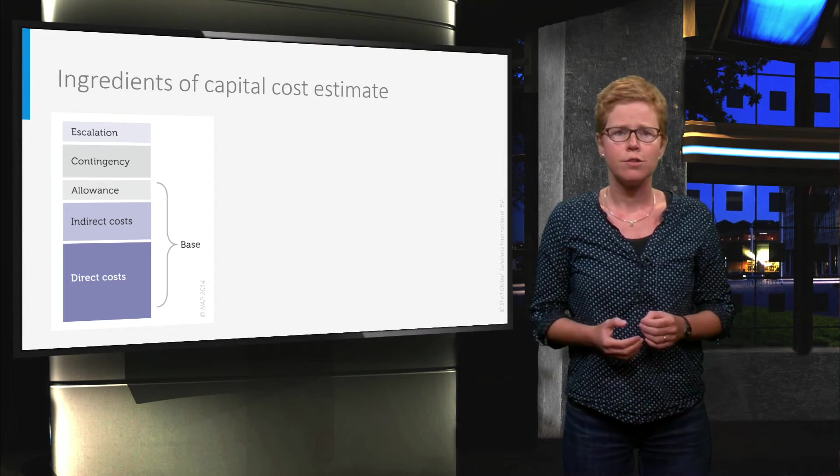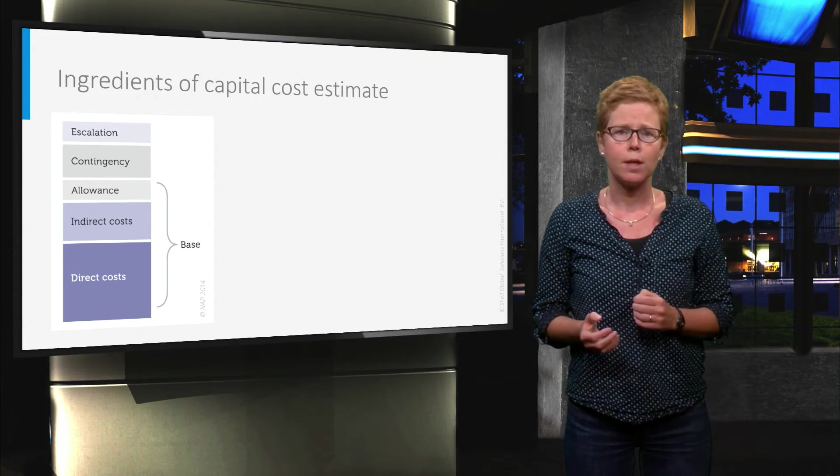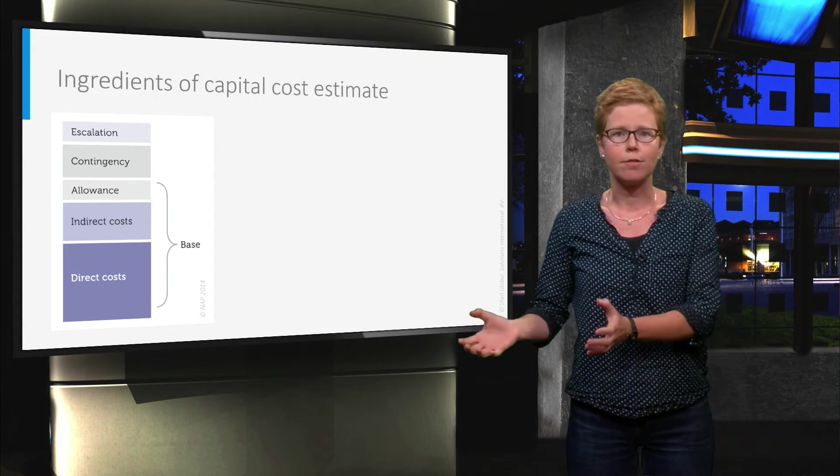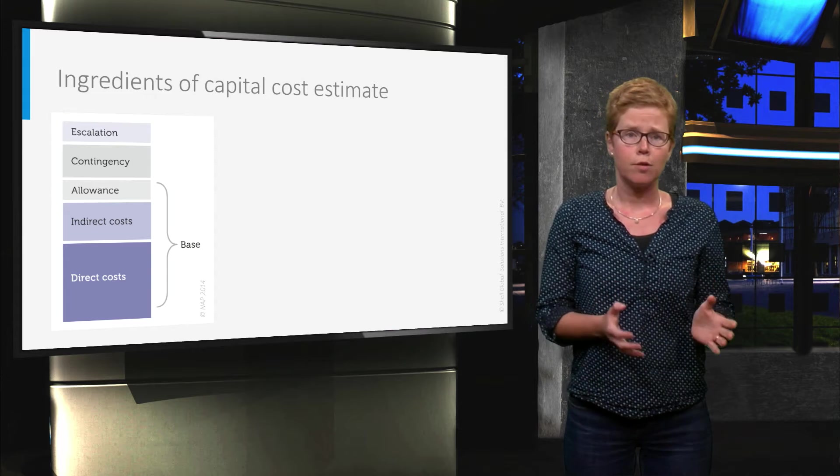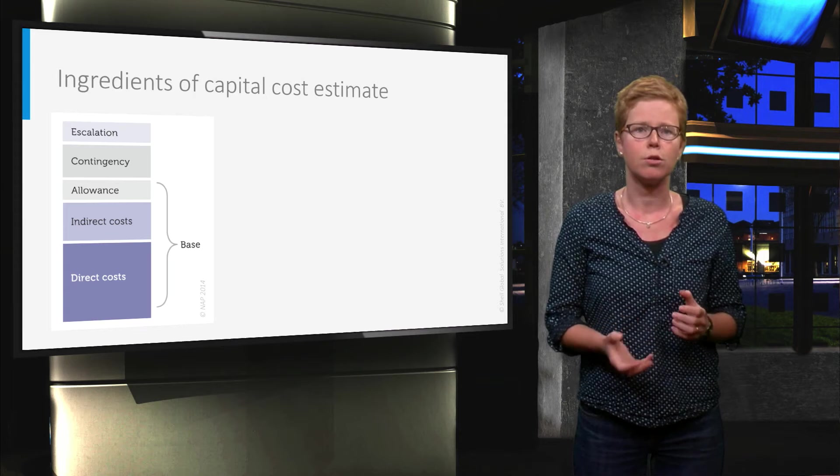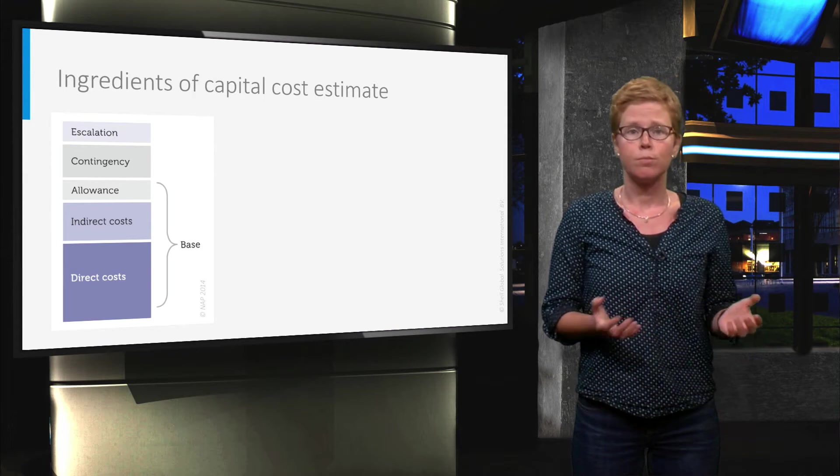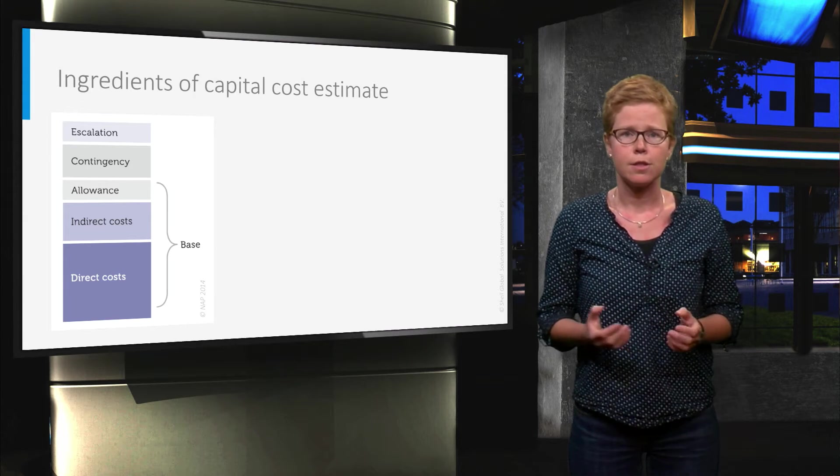What are the ingredients of a capital cost estimate? Cost elements can be split into direct and indirect costs. Direct costs are costs that can be directly allocated to a specific scope of work or an activity. For example, equipment, project management, subcontractors, etc.